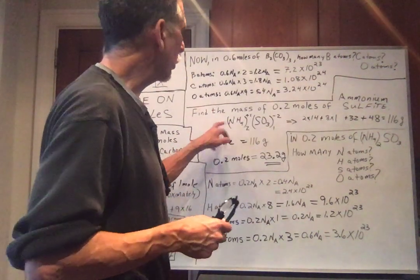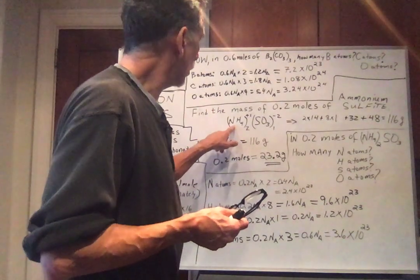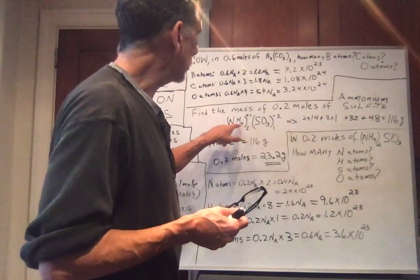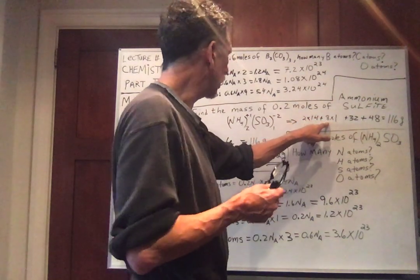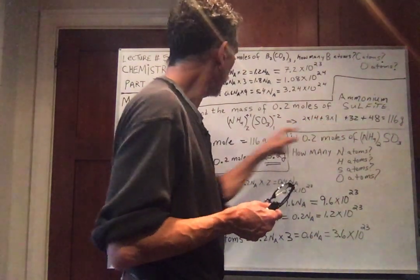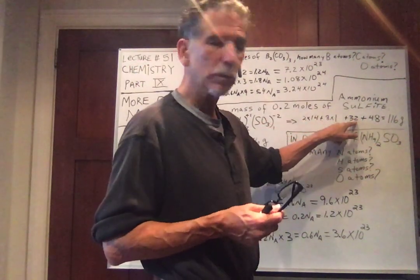So let's do 1 mole. So what do we have? We have 2 nitrogens, 8 hydrogens. So 2 nitrogens. Nitrogen is 14. 8 hydrogens. Hydrogen has an atomic mass of 1. Now we have 1 sulfur. I believe sulfur has 32.